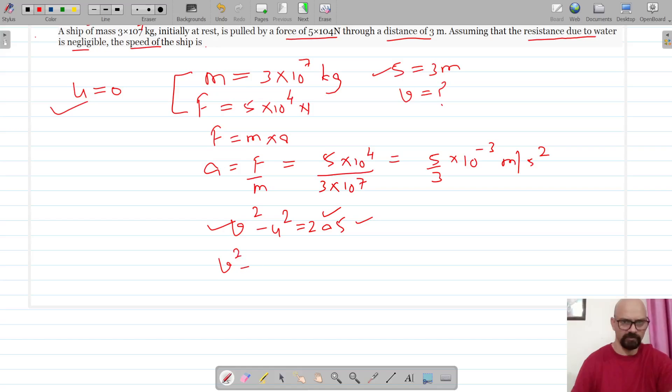So v² - 0² = 2as. The distance covered is 3 meters, and the acceleration is 5/3 × 10^-3. So v² = 2 × (5/3 × 10^-3) × 3. The 3s cancel out, giving v² = 10 × 10^-3 = 10^-2 = 1/100.